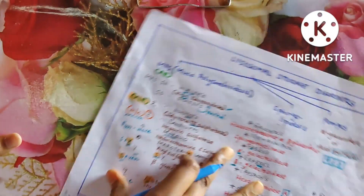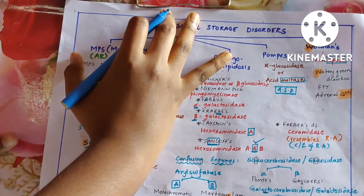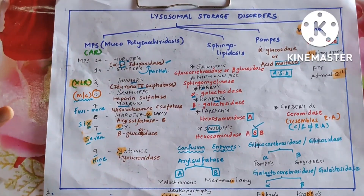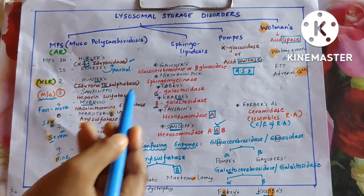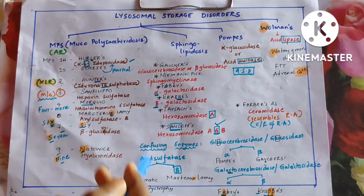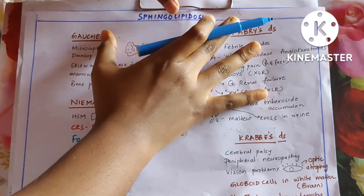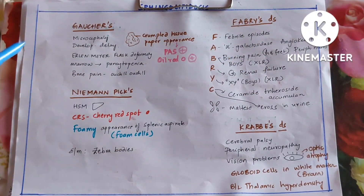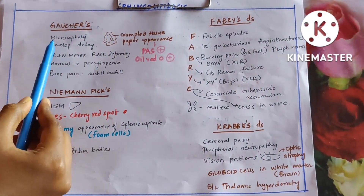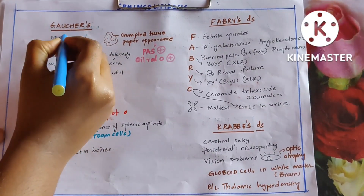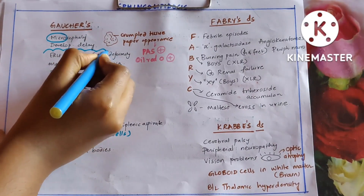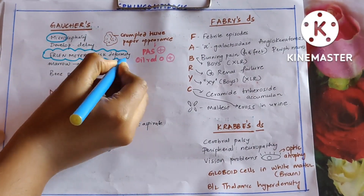This completes the discussion about all the mucopolysaccharidosis. Now let us discuss sphingolipidosis — sphingolipidoses have different names: Gaucher's, Niemann-Pick, Krabbe's, Fabry's, and others. Individual diseases have some clincher points, so you need to find those clinchers in the question to come to the diagnosis. Gaucher's disease presents with microcephaly — very important — developmental delay, and Erlenmeyer flask deformity of the long bones on X-ray.